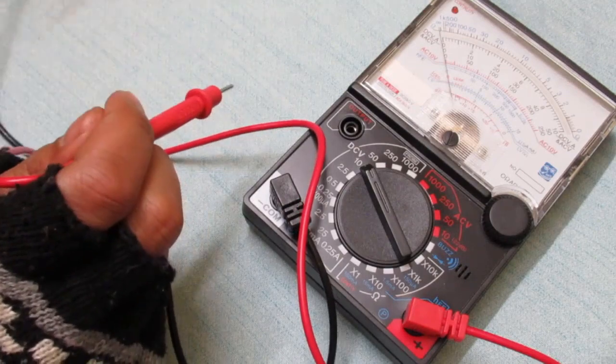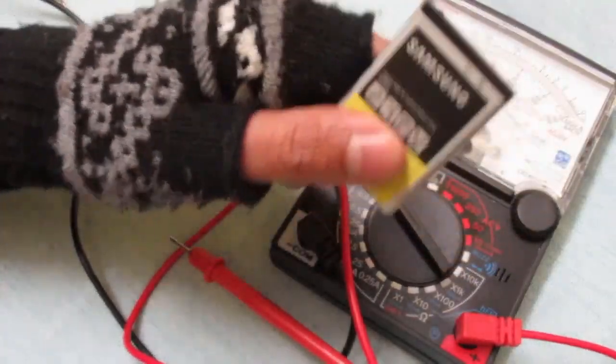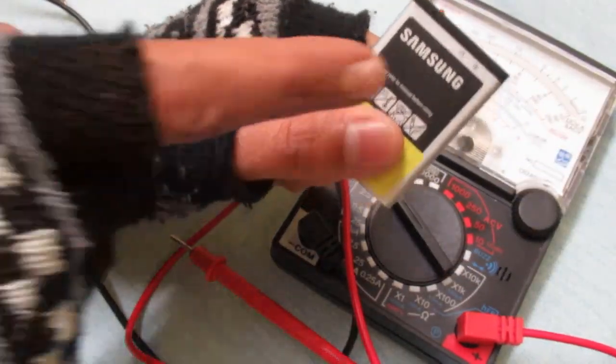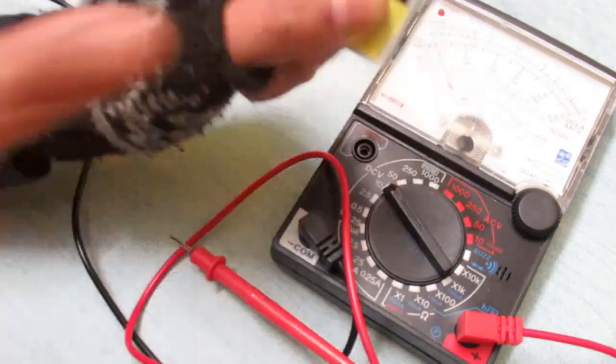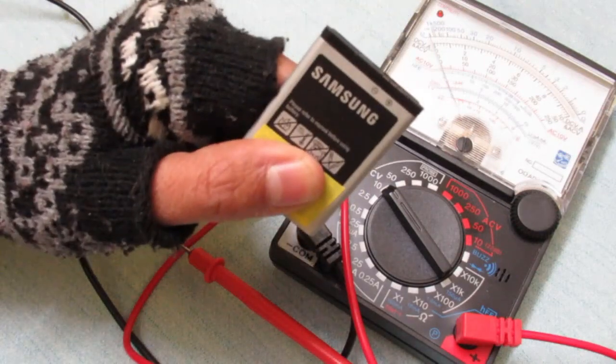Now let's measure another mobile battery voltage. As you can see, there are three terminals on this battery. One is positive, one is negative.